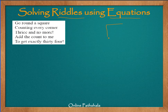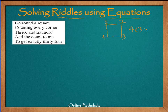So if we have a square, how many corners does it have? Starting from corner 1, 2, 3 and 4 — we have 4 corners. If I go around the square 3 times counting these 4 corners, it will be 4 times 3, which gives me 12. Then add the count to mean — that's an unknown number which will give us exactly 34. So the algebraic equation could be: 12 plus the unknown number n equals 34.